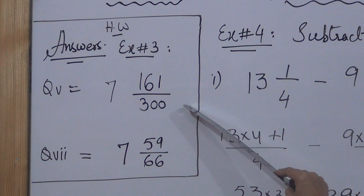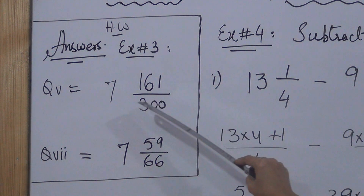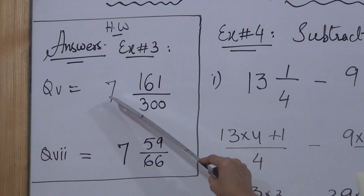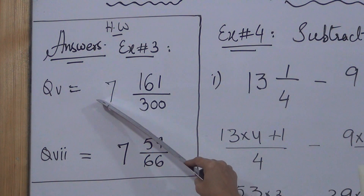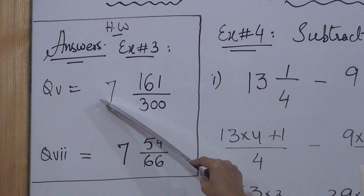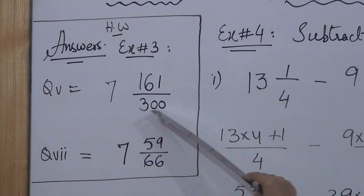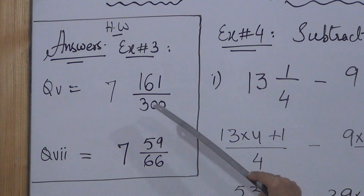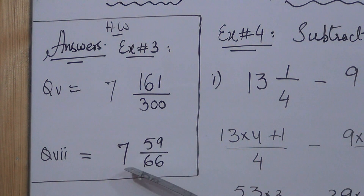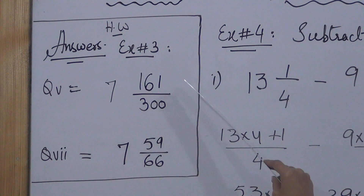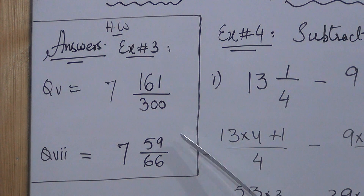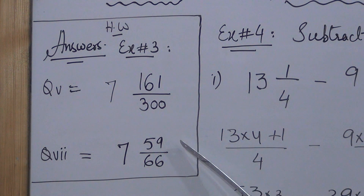We write the result as a mixed number and add it as a mixed number, then write it as a fraction. We follow the same process for question number 7. I have mentioned the answers here — you have to check your answers.